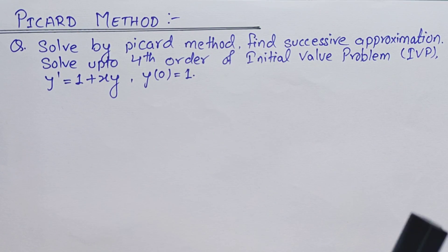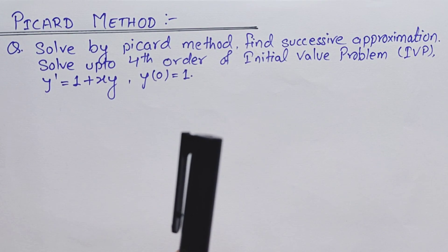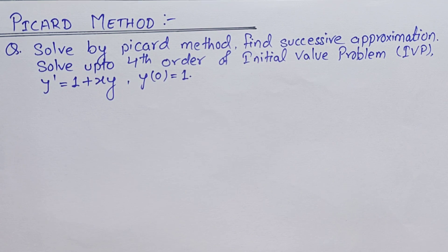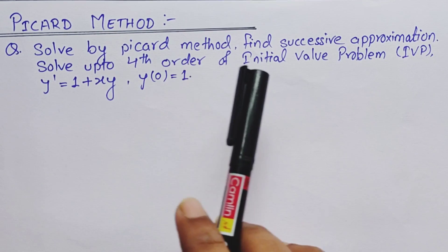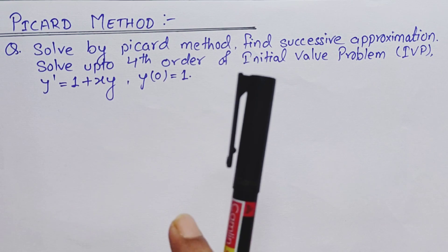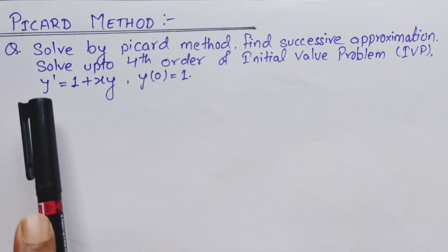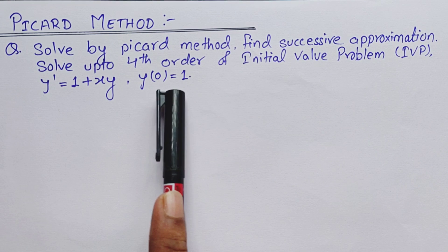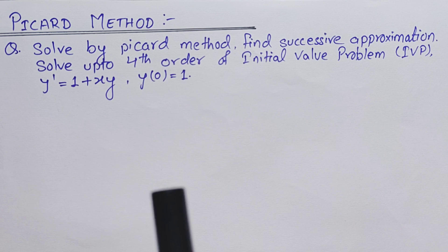Hey guys, welcome back to Civil Learning Online. Today in this video I am going to discuss Picard's method. It is also a method of finding the successive approximation. Here I have selected a numerical in which we are asked to find the successive approximation up to fourth order of an initial value problem. We are provided with the numerical problem: y dash equals to 1 plus xy, and this is our boundary condition.